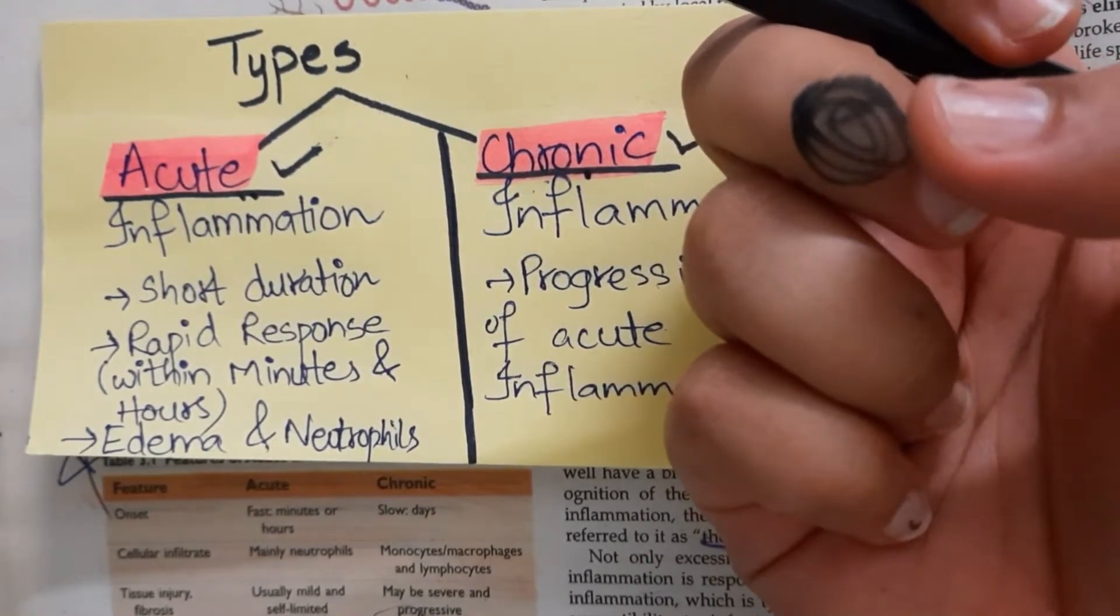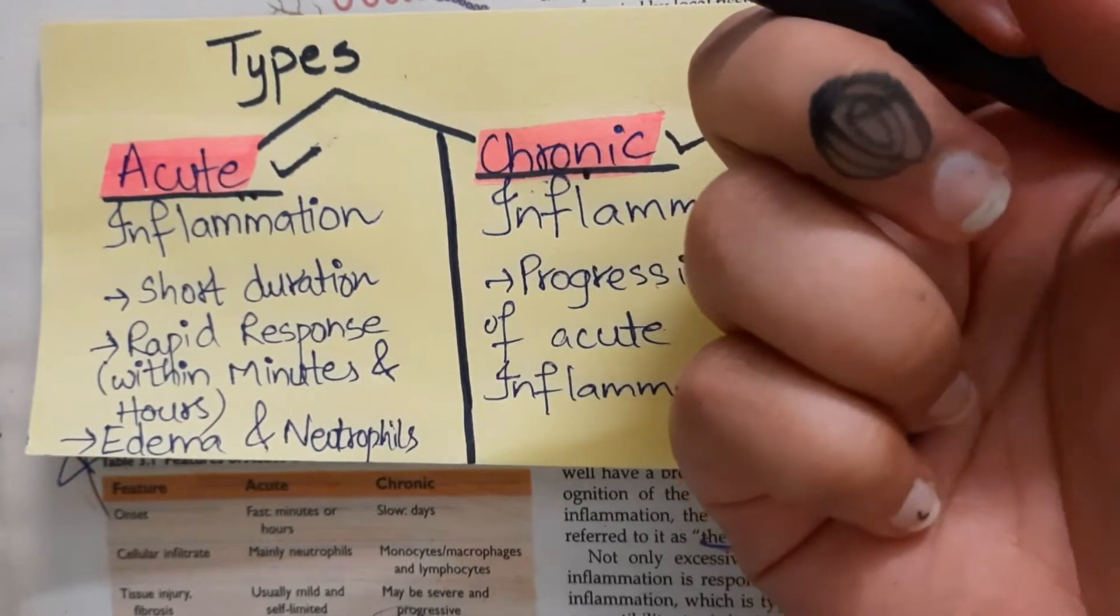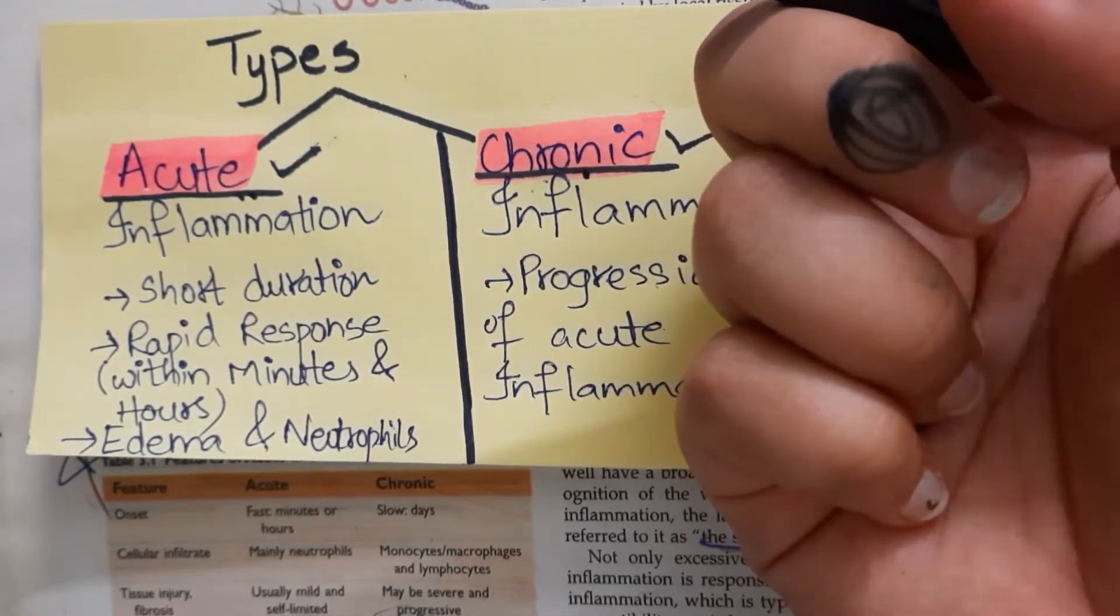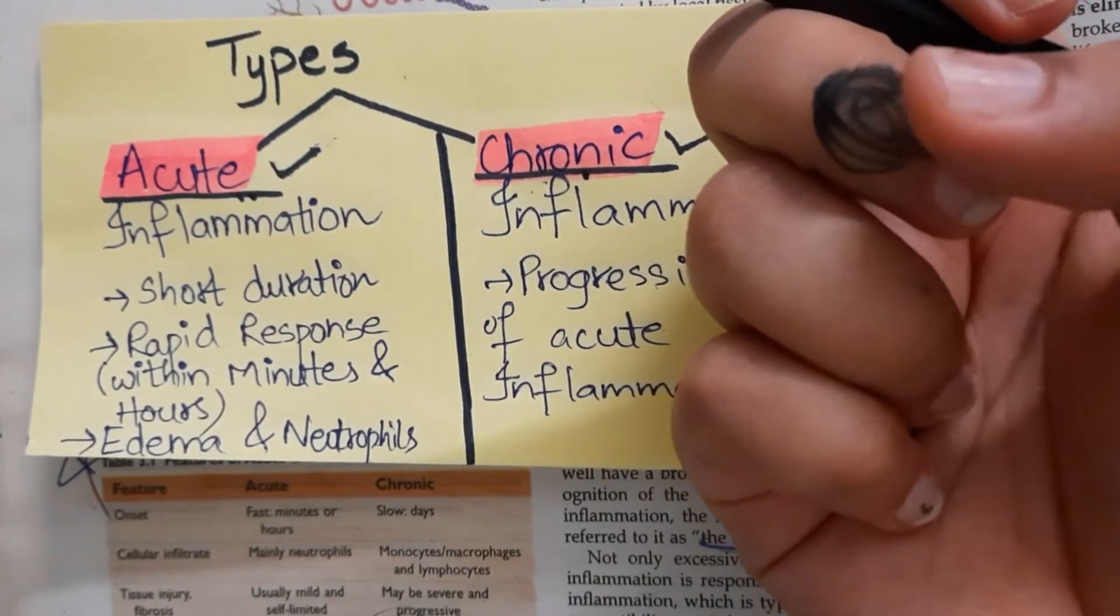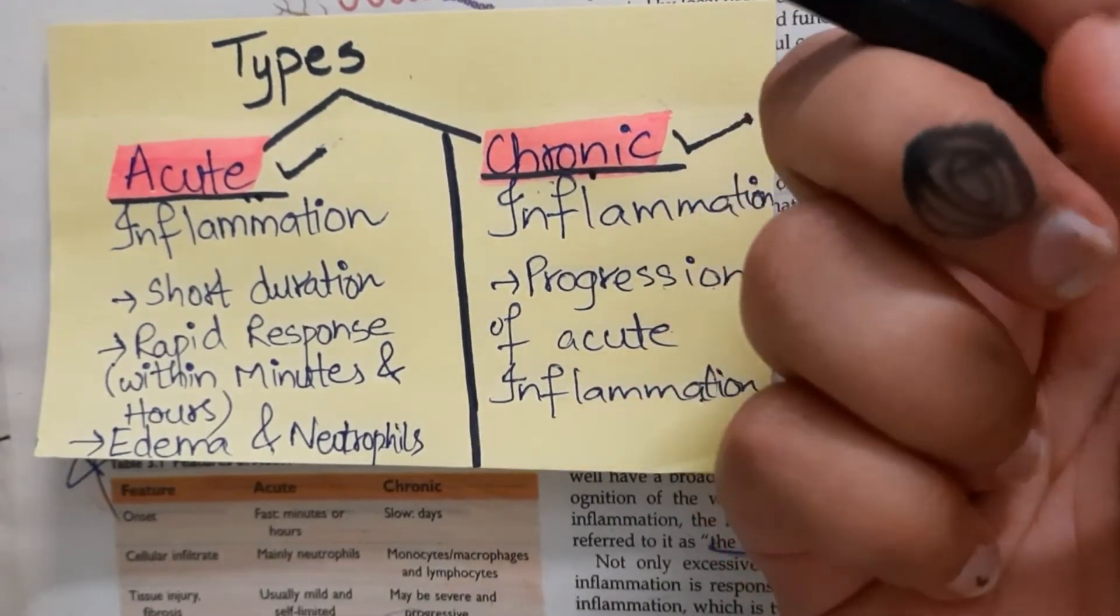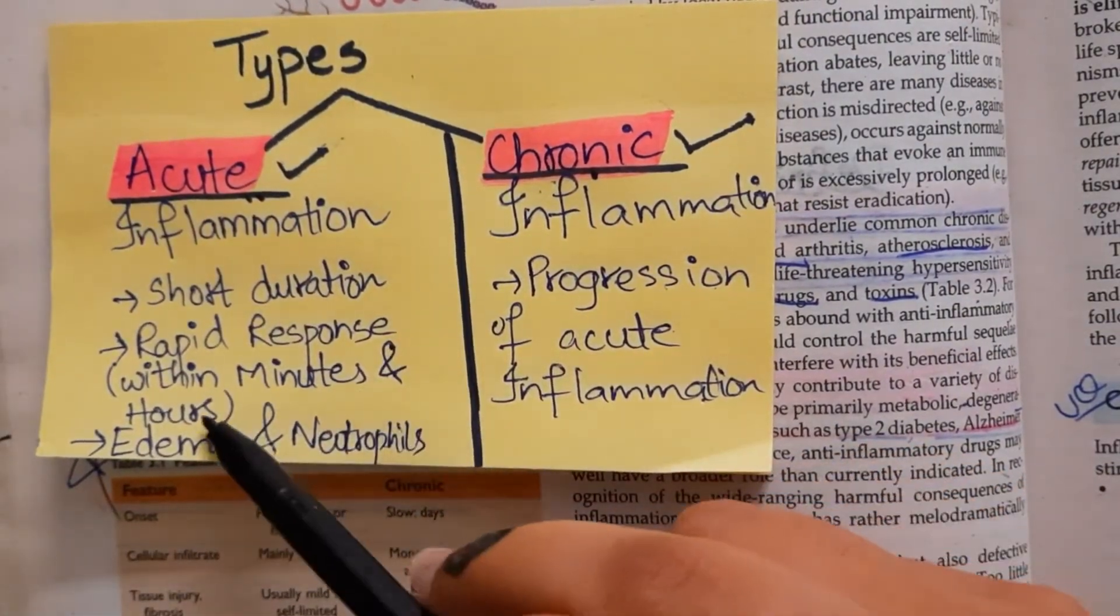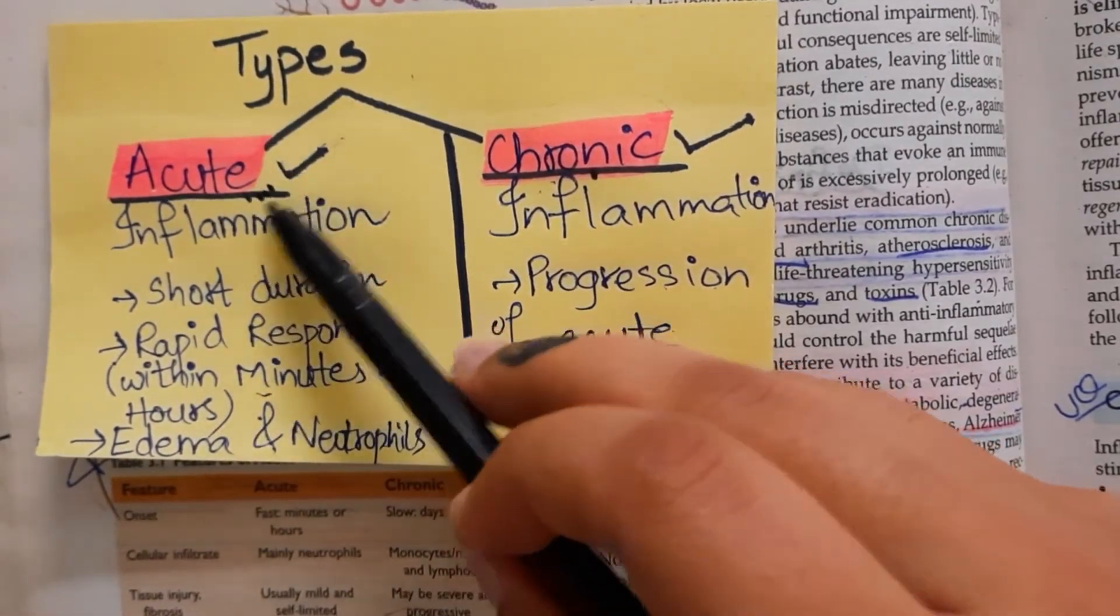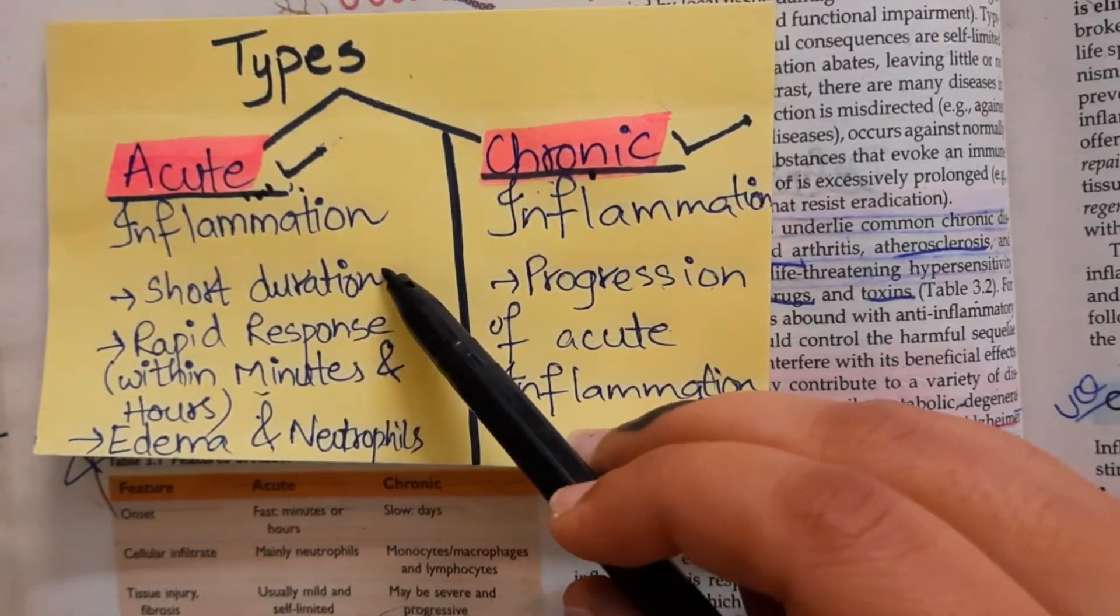Now what happens is that the host or the body of the host rapidly recognizes the microbes entering into the skin and a rapid response occurs. This rapid response occurs within minutes and hours, and this is called acute inflammation. This is the acute response, acute inflammation.